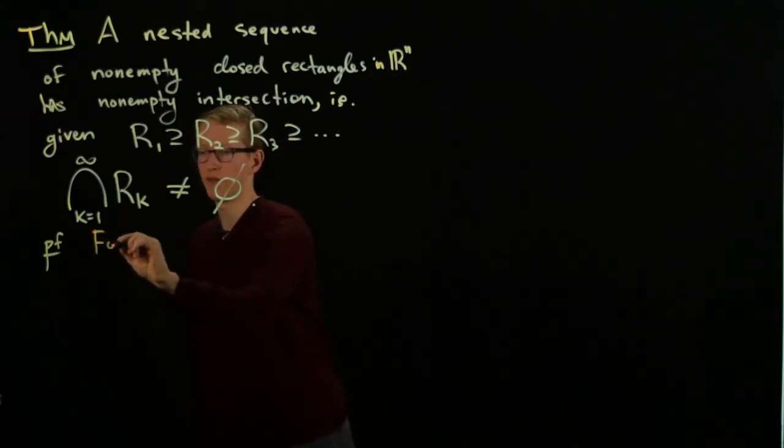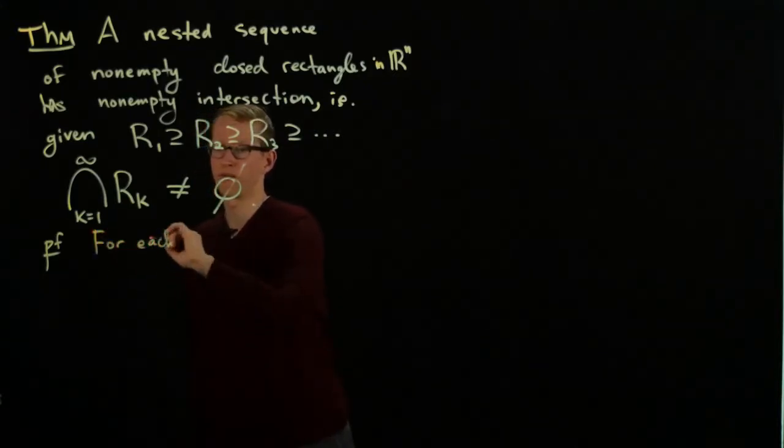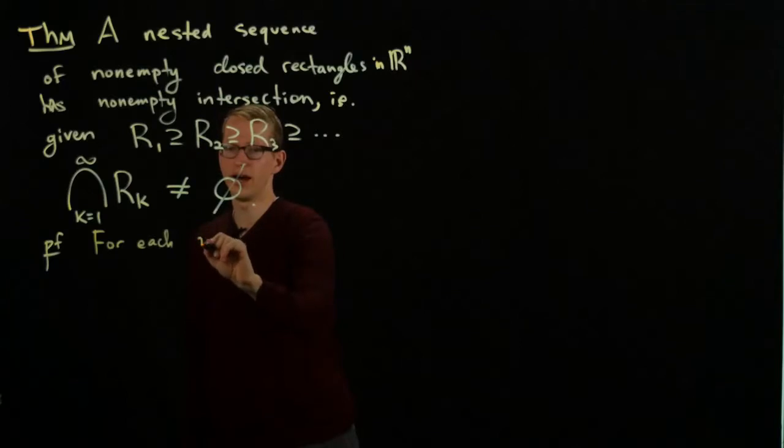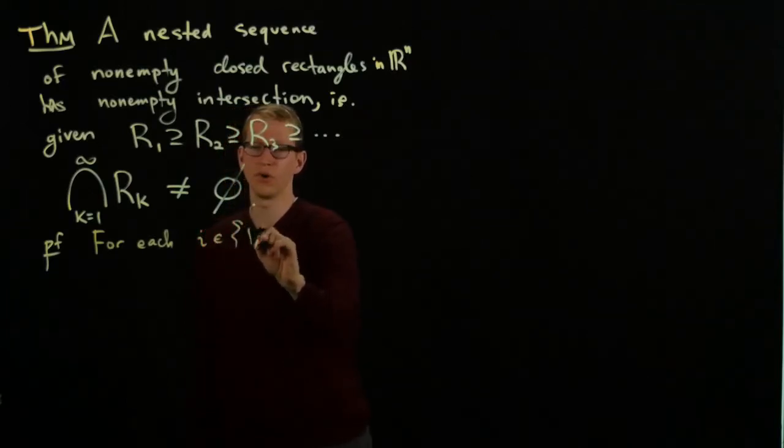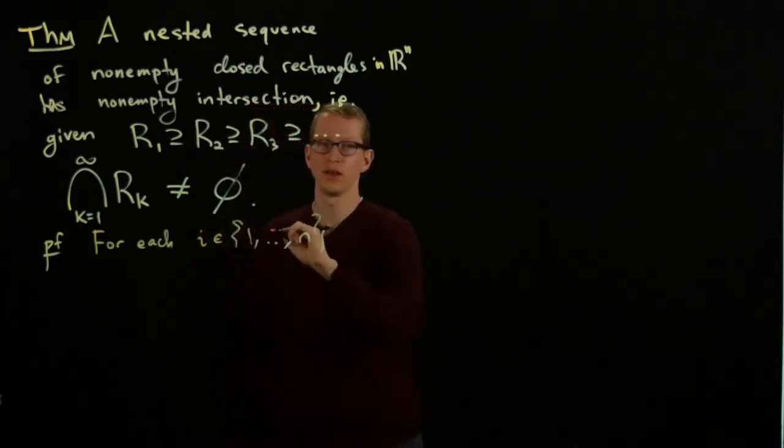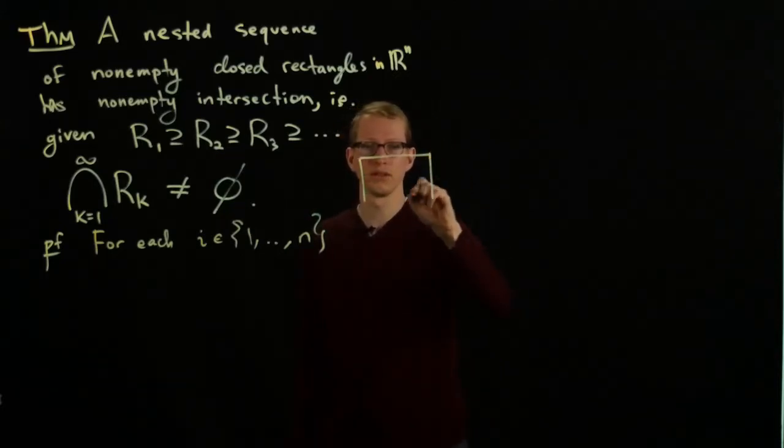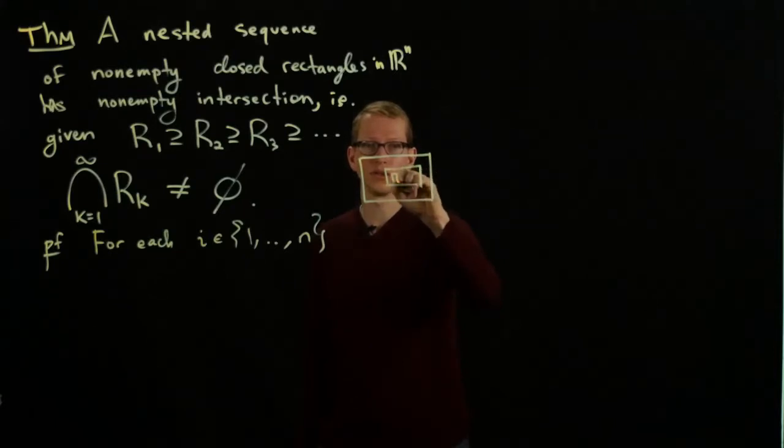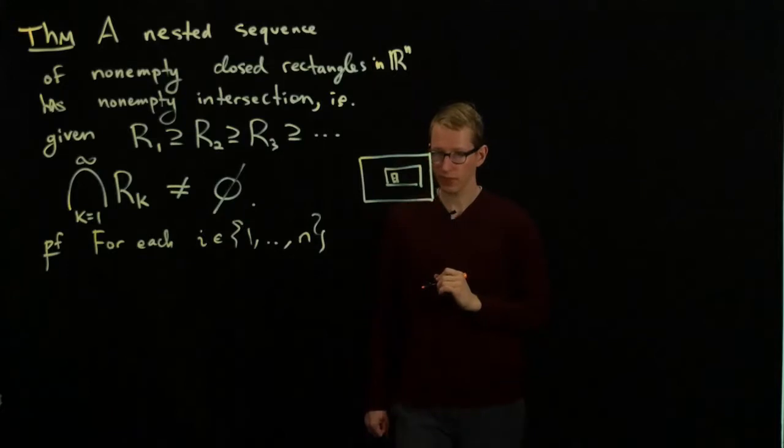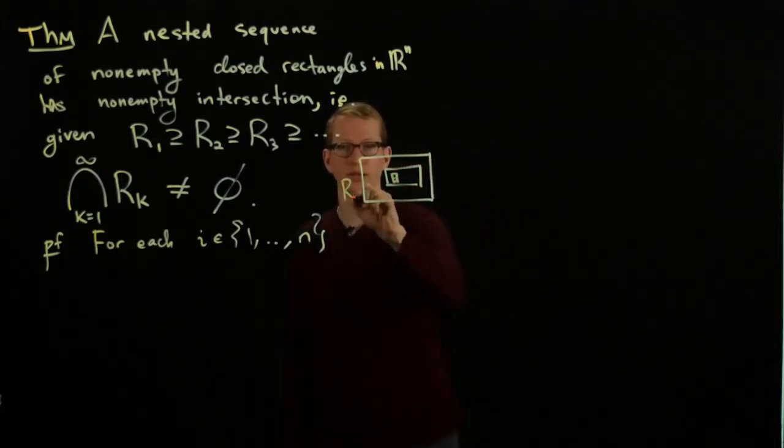For each i between 1 and n, we can take these rectangles. Here's a little picture of these rectangles. They could look something like this, and they get smaller and smaller. So here's R1, R2, R3, and so on.